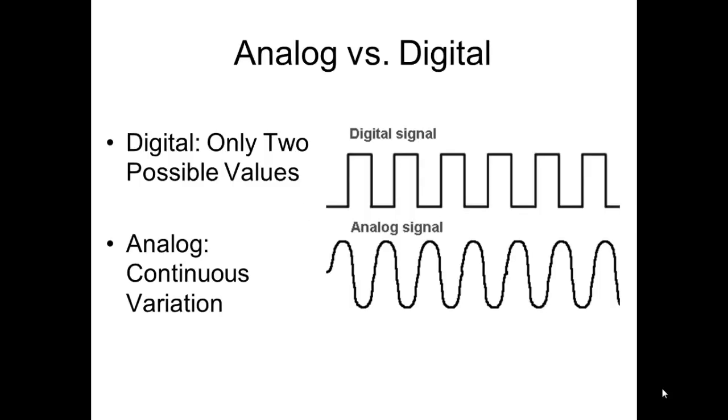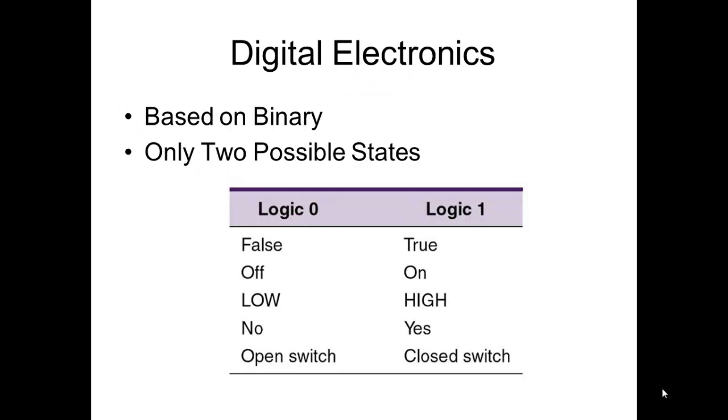This is a quick overview of combinational logic. In analog versus digital, we have two possible conditions: a digital signal and an analog. Digital has only two possible values, while analog has continuous variation. This shows a type of analog signal, not necessarily the only type. Remember that digital is based on binary where there are only two possible states.